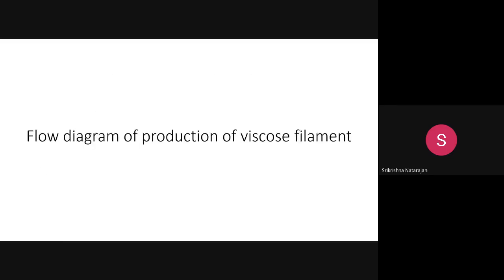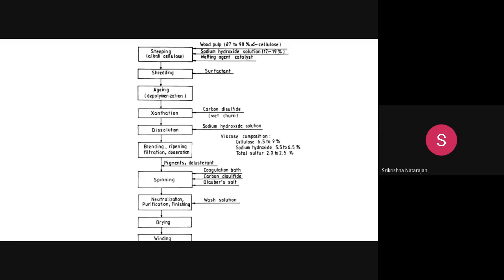The flow diagram for production of viscose rayon filament shows many steps: steeping, shredding, aging, xanthation, dissolution, blending, ripening, filtration and de-aeration, spinning, neutralization, purification and finishing, drying, and winding.